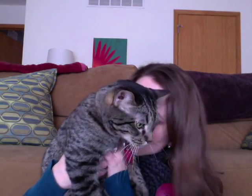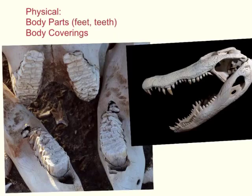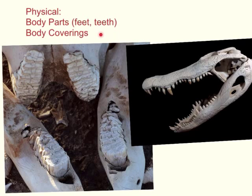We're going to take a look in today's video at different animals and how they have both physical and behavioral adaptations to help them survive in their environments. So let's dive in and check it out. When we think about physical adaptations, there are two main areas to focus on: specific body parts like feet and teeth, and also body coverings.